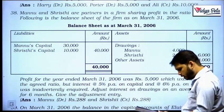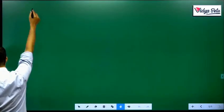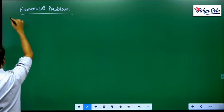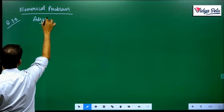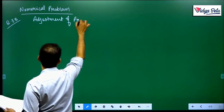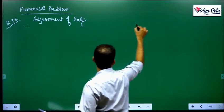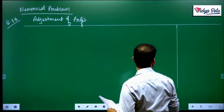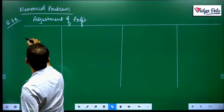So let us do question number 38. In this adjustment table we will just make the adjustment of profits. How many partners? Two partners. So the total column can be bigger, one and two.